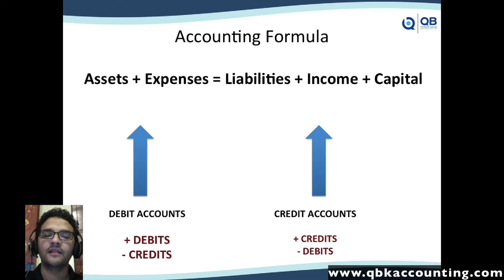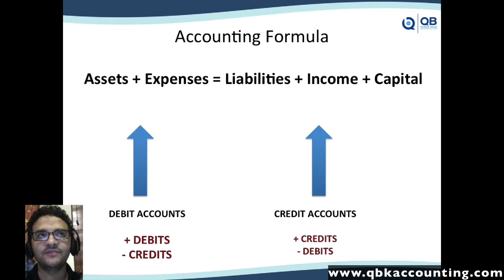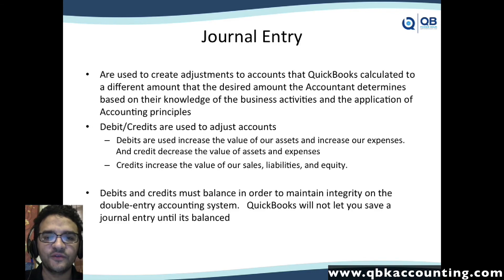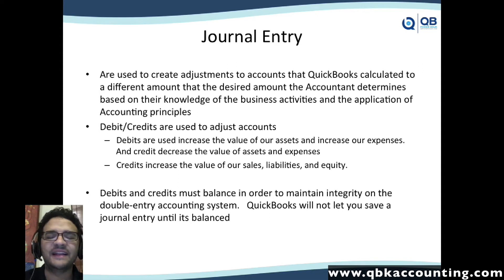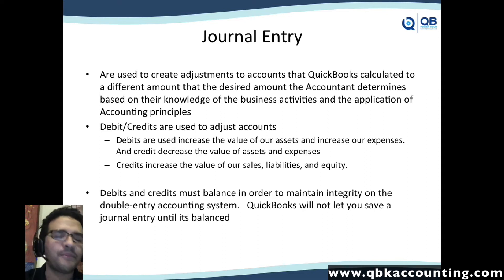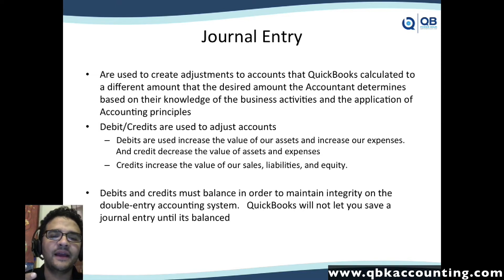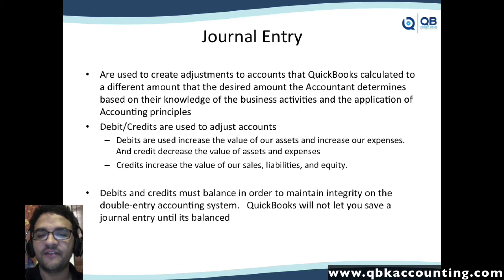I find that to be one of the best ways to learn the accounting formula and then understand why a debit and a credit works the way it does. So let's move on to doing a journal entry. Now that we know, based on the type of account we're dealing with, what's a debit and what's a credit, let's talk about what a journal entry is. A journal entry is when we need to make an adjustment to the value of an account because QuickBooks didn't calculate the desired amount the accountant was looking for in order to apply all the accounting principles and give the right value to an account on the balance sheet.